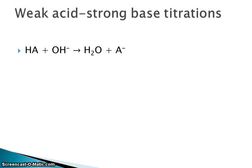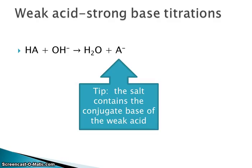Let's talk about weak acid-strong base titrations. The net ionic equation is a little different because I have a weak acid — it's not going to dissociate appreciably; less than 5% of the molecules will have dissociated. They'll react with the hydroxide ion to make water, and then I'll have the conjugate base of the weak acid. The salt contains the conjugate base of the weak acid.